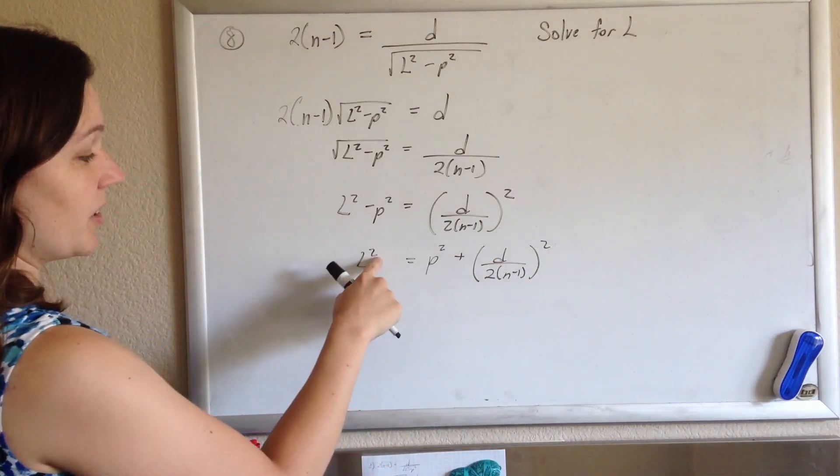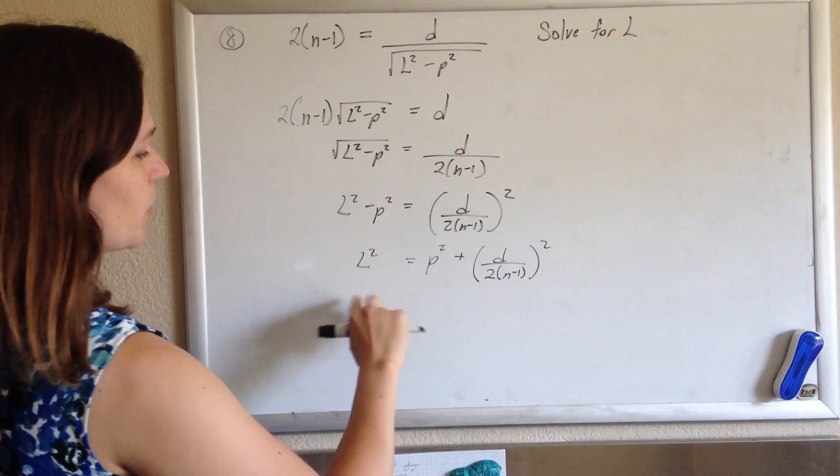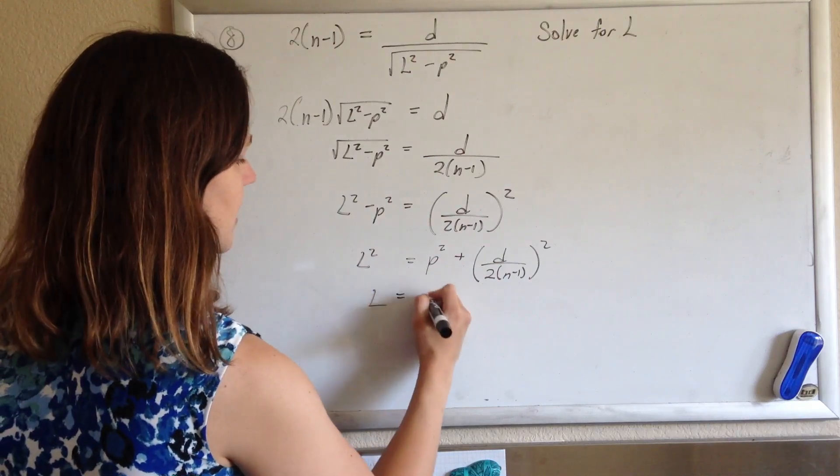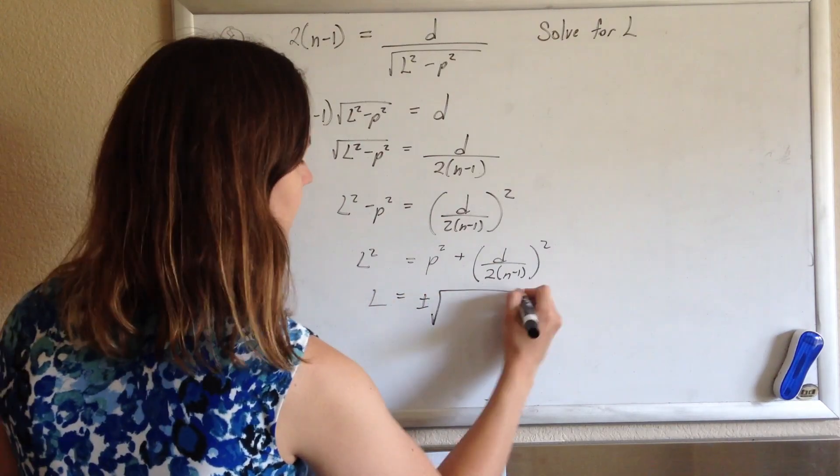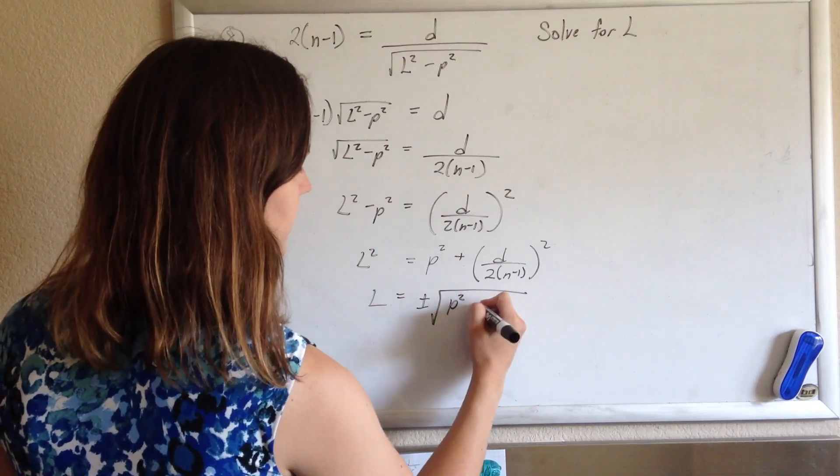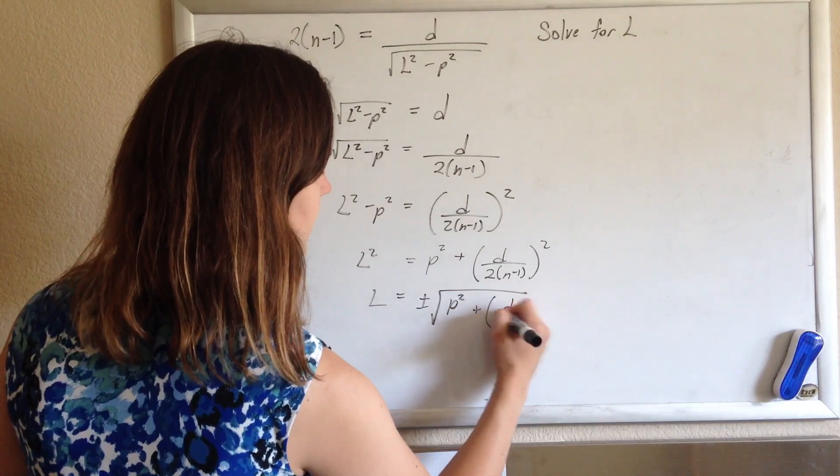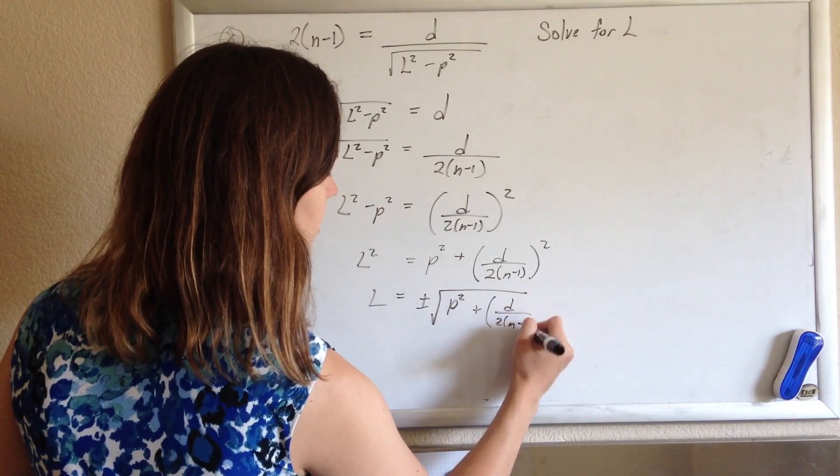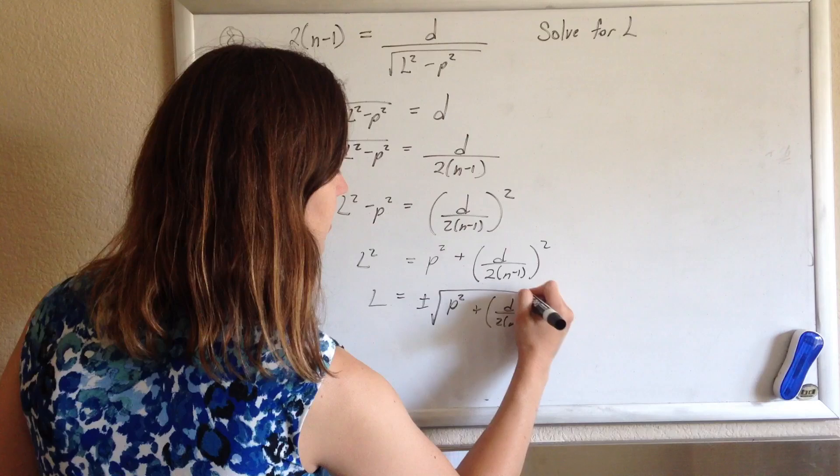And finally I'll undo this squaring by taking the square root of both sides. Remember every time I take a square root I'll have a plus or minus. And so L will equal plus or minus the square root of P squared plus D over 2 times n minus 1 quantity squared.